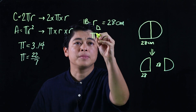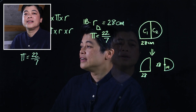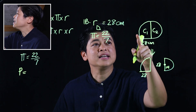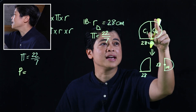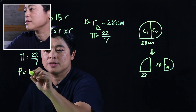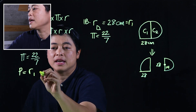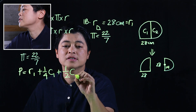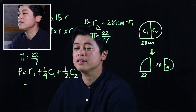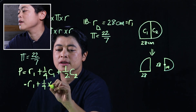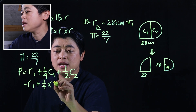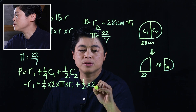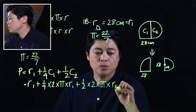We'll use pi equal to 22 over 7. For the perimeter, we want: radius one, plus one-fourth of circumference one, plus one-half of circumference two. So the formula is: r₁ + (1/4)(2πr₁) + (1/2)(2πr₂).